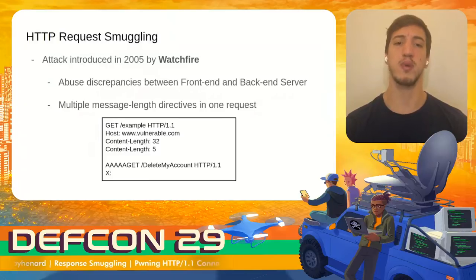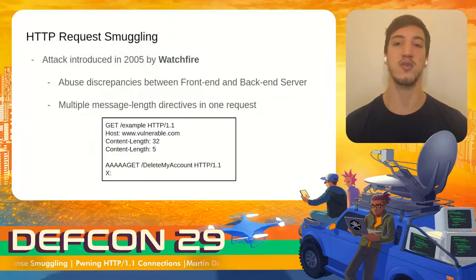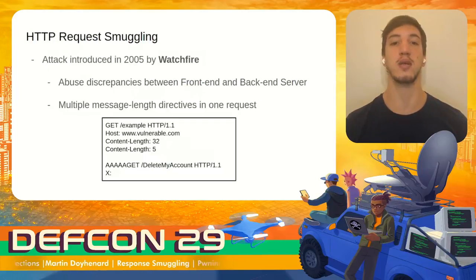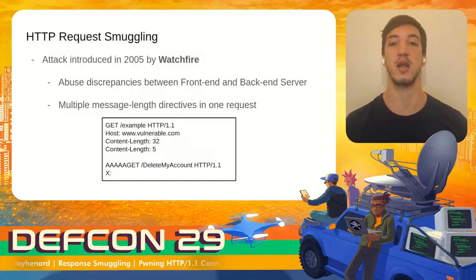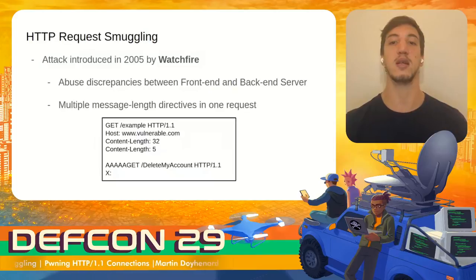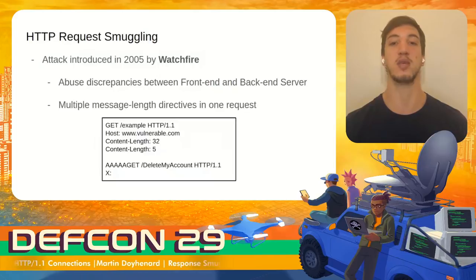Request smuggling is an attack introduced in 2005 by WatchFire, which abuses the differences between a frontend and a backend server. These differences are related to the way the HTTP parser calculates the body length of a request. The idea is that the attacker sends a request containing multiple message length headers — such as content-length or different transfer-encodings — and if the frontend calculates the length of the body using a different header, it will be possible to split the request and inject a prefix for the next message.